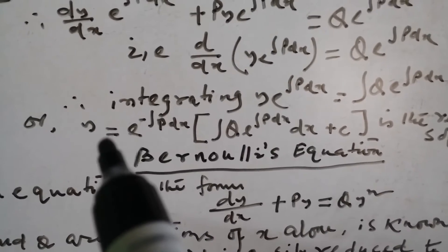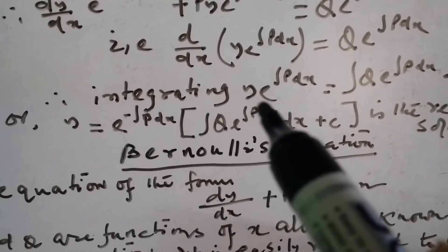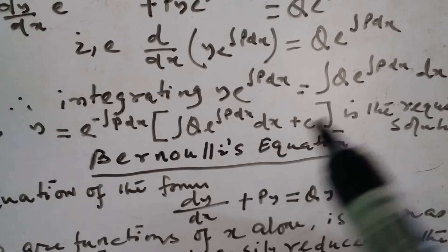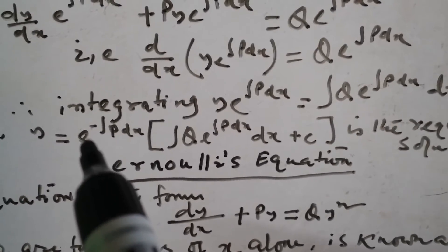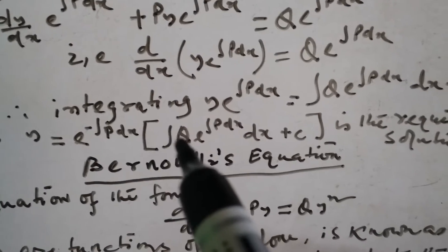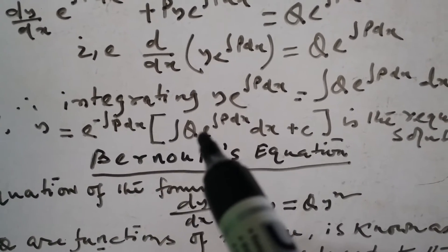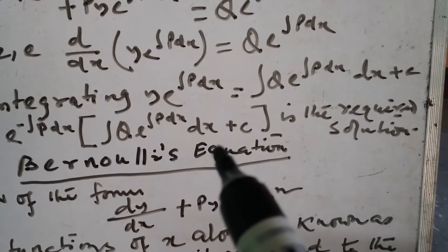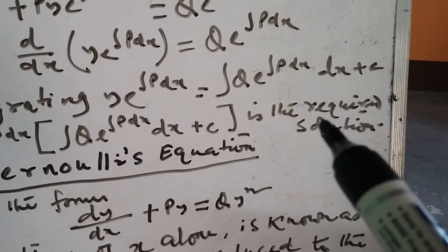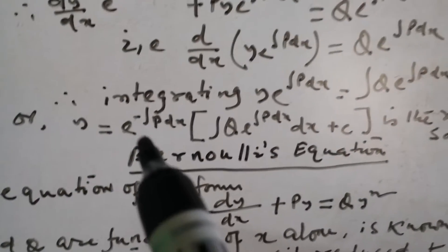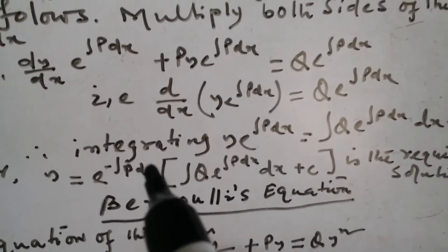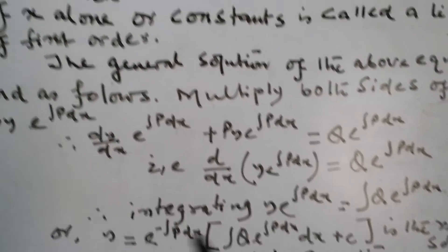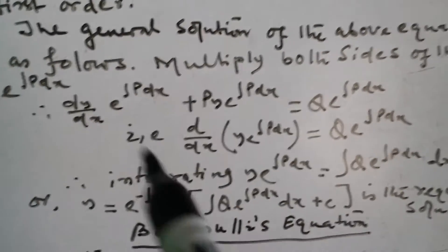Plus c. So y is equal to y times e^(∫p dx); if you divide here, you get e^(−∫p dx) times the bracket: integral of q times e^(∫p dx) dx, plus c. This is the required solution, called the linear equation, solved by this method.